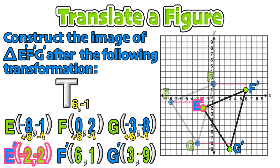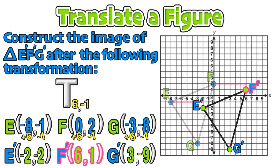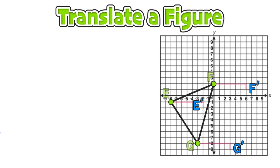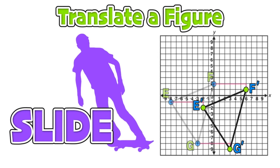And we can see that our points E prime at (-2, -2), F prime at (6, 1), and G prime at (3, -9) all correspond. And we can take one last look at that figure taking a slide across the coordinate plane.